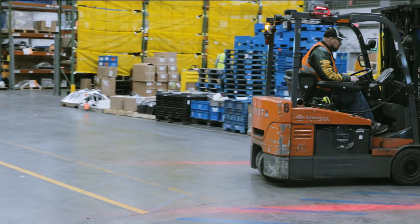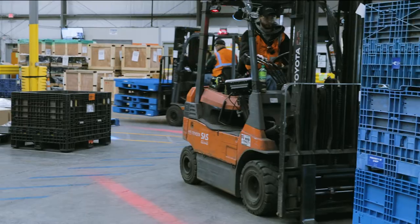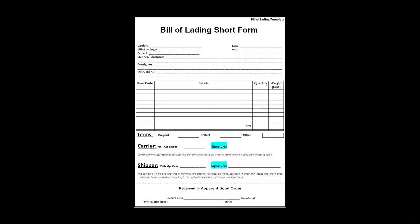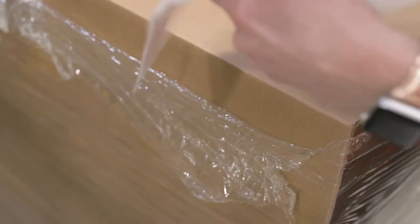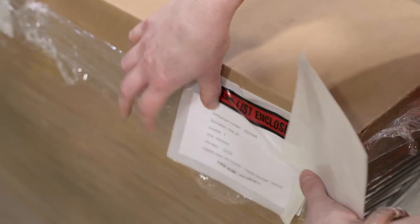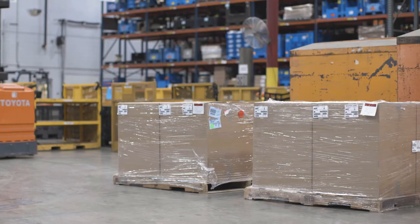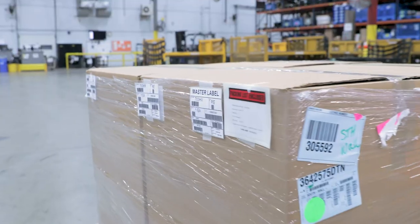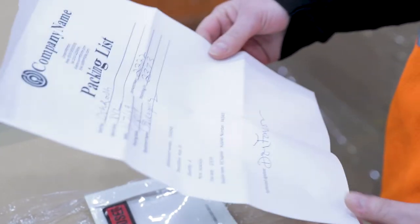Some important instructions to remember when shipping product to Oshkosh Corporation include the following. First, a bill of lading shall accompany each shipment. A packing list shall be attached to every box that is not part of a palette unit load. All parcel shipments shall have a packing list attached to every box. A single palette shipment must have a packing slip that accurately identifies all contents on that palette.